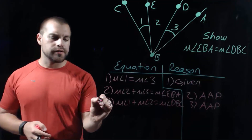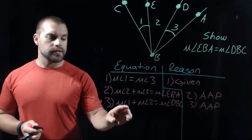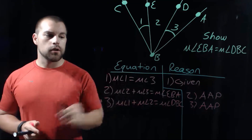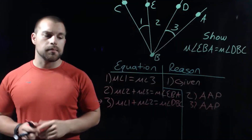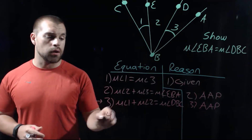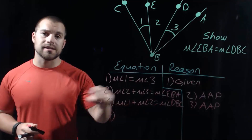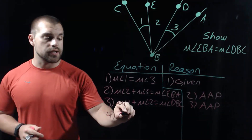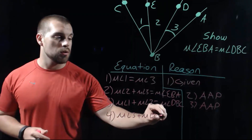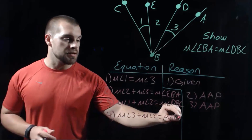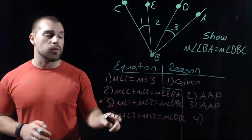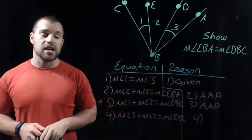Now focusing on step three: we said angle 1 plus angle 2 equals angle DBC. But earlier we said angle 1 and angle 3 are the same thing. So where we have the measure of angle 1, we use the substitution property to replace it with the measure of angle 3. Our equation then reads: the measure of angle 3 plus the measure of angle 2 equals the measure of angle DBC. That's our substitution property — we replaced something with something it's equal to.